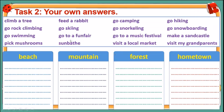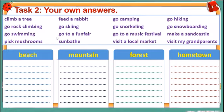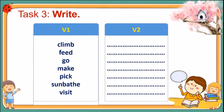Now students, write your answers. We move on to Task 3 — write the past form of the verbs: climb, feed, go, make, pick, sunbathe, visit.